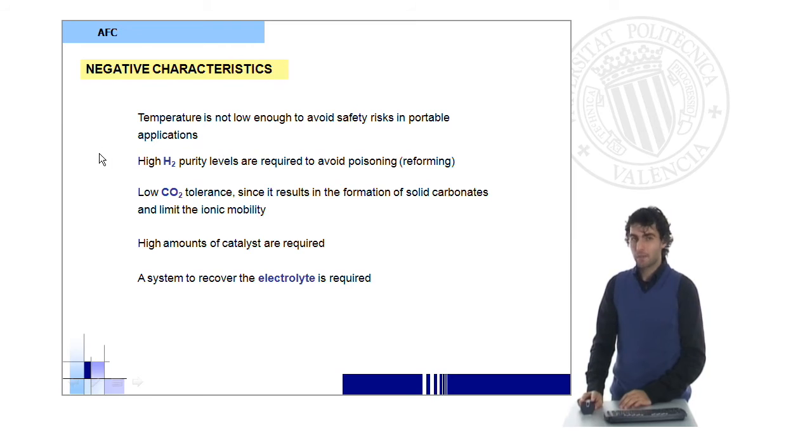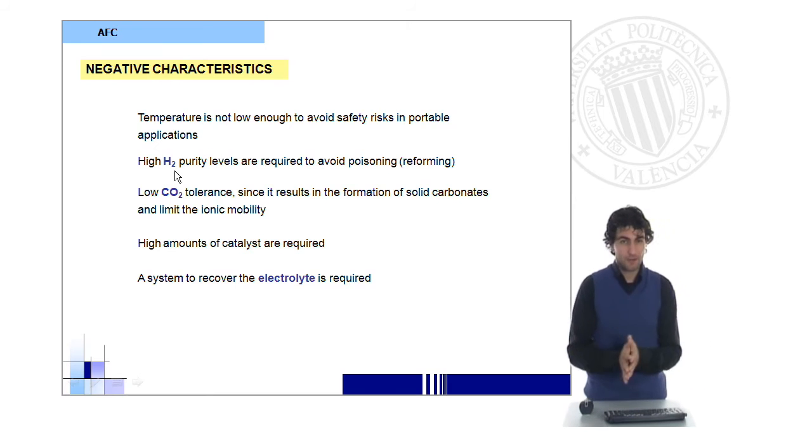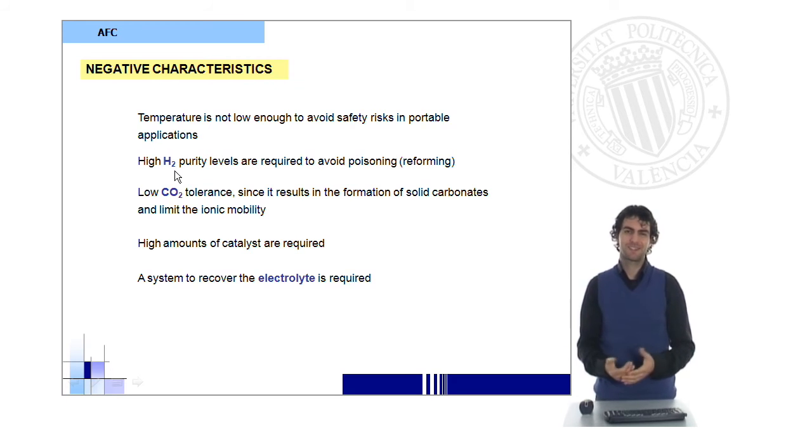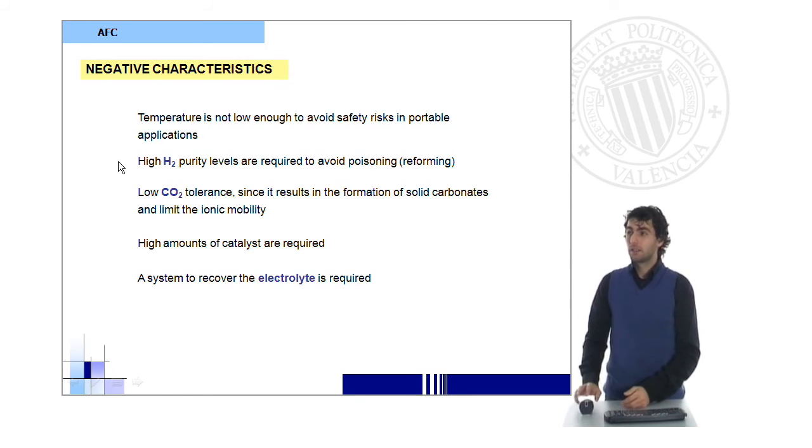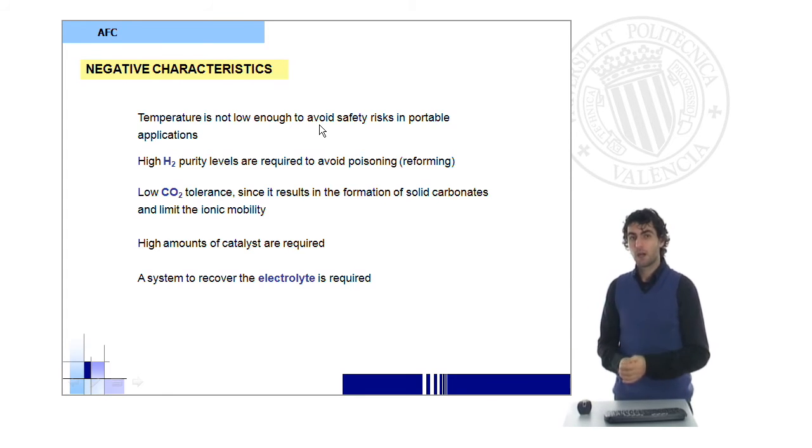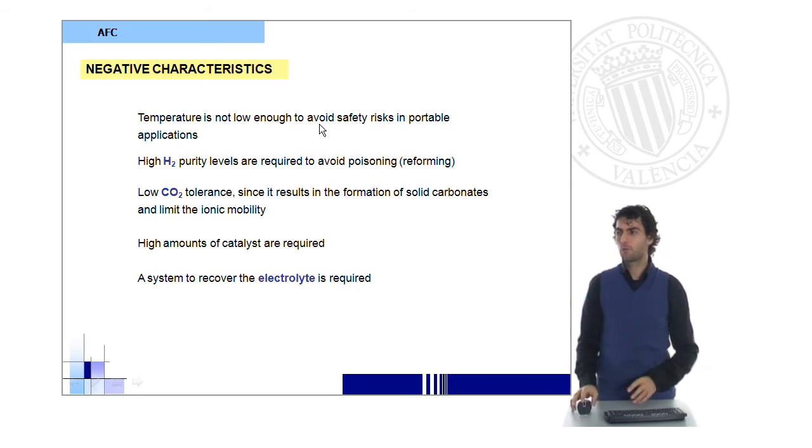We still have some drawbacks. As I mentioned before, we're required to use very pure hydrogen at the anode because the catalysts we use are very sensitive to poisoning. The temperature is not low enough to avoid safety risks in portable applications. Proton exchange membrane fuel cells may be more suitable for these kinds of applications.